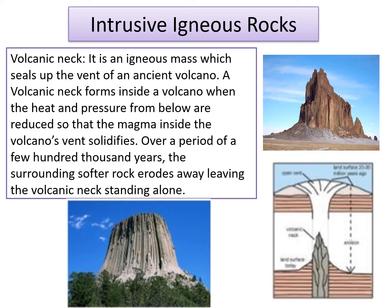Now we come to volcanic neck. A volcanic neck is an igneous mass which seals up the vent of an ancient volcano. A vent is an opening in the earth's crust from which hot molten rock and volcanic gases escape into the atmosphere. A volcanic neck forms inside a volcano when the heat and pressure from below are reduced. Because of this reduction, the magma does not rise up but solidifies inside the volcanic vent. Over a period of a few hundred thousand years, the surrounding softer rock erodes away, leaving the volcanic neck standing alone.